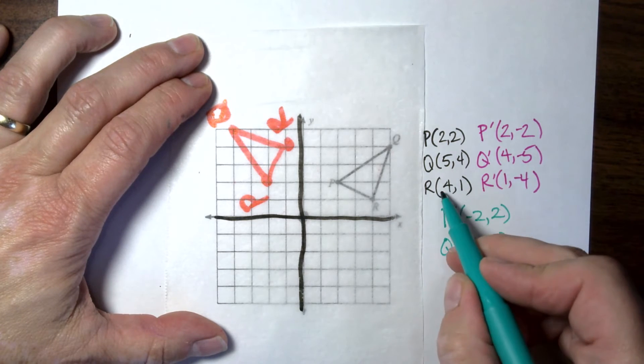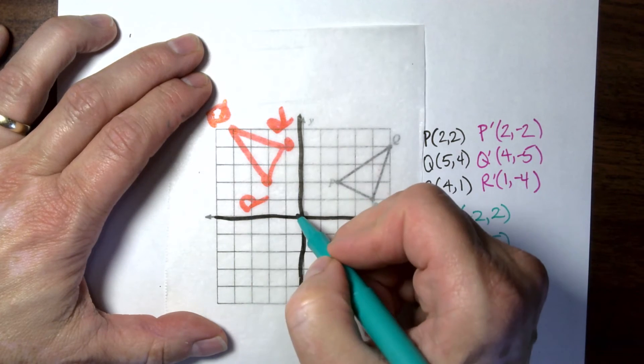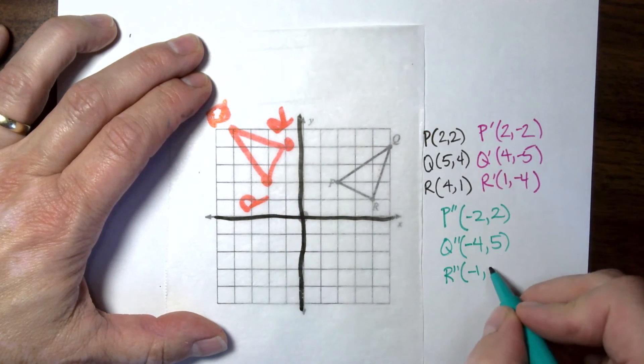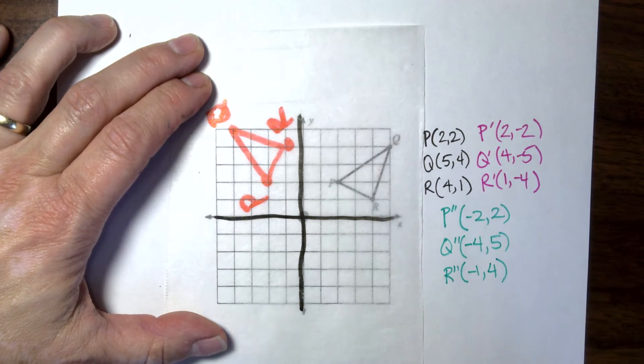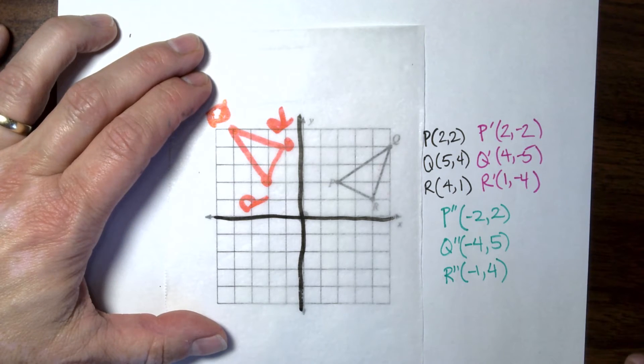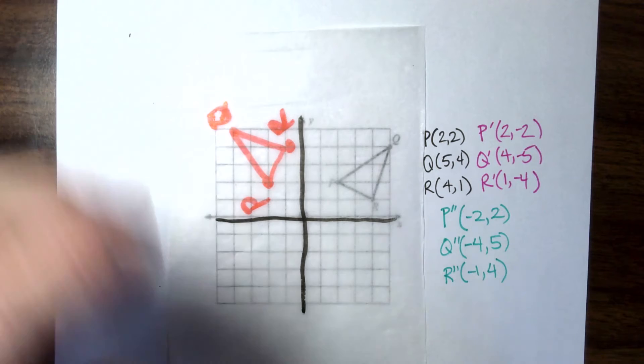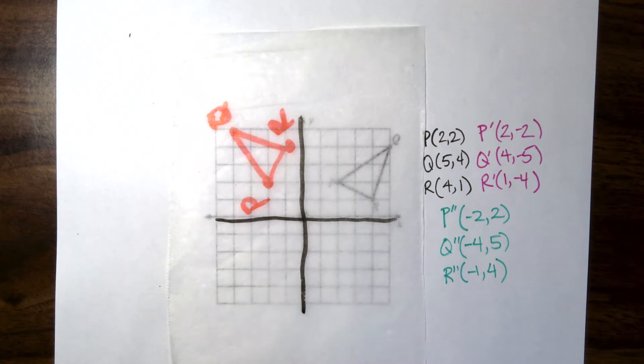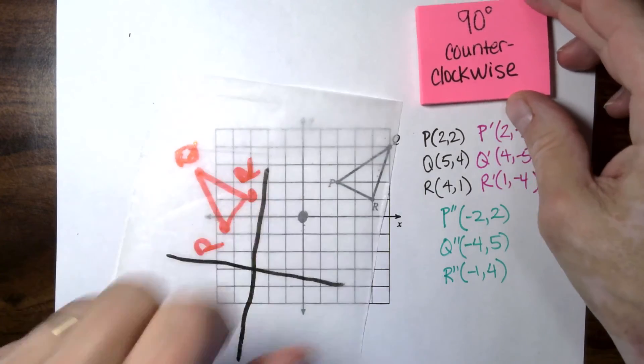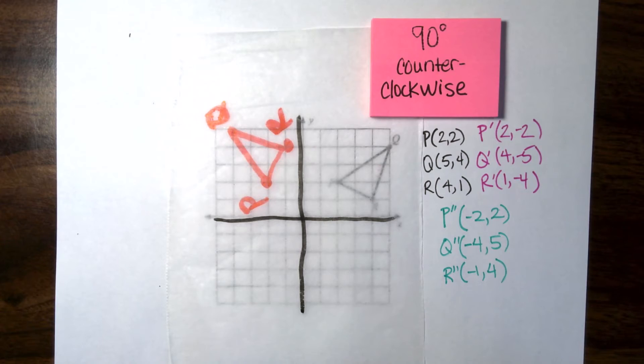And our R double prime, our new one is negative 1 and 4. And right now, I'm sure there are some students who are like going, I can see some shortcuts. You can definitely see the patterns. And we're using the same number. Sometimes they flip and sometimes they change signs, but it's still the same number. It's nothing completely different. So that was 90 degrees counterclockwise, what that would look like.